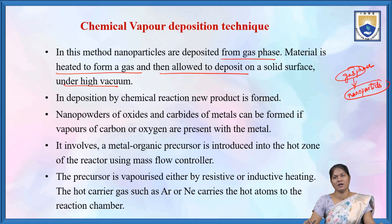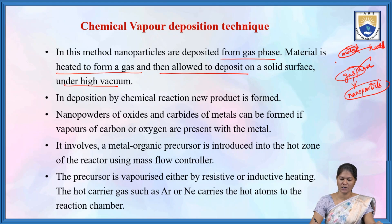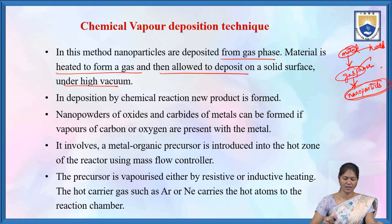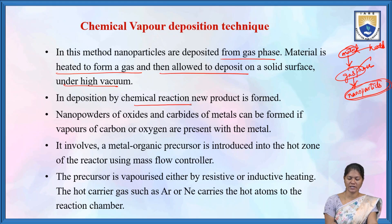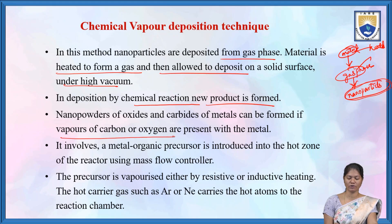In this method, nanoparticles are deposited from the gas phase. The material is heated so that it converts into gas phase and then is allowed to deposit on the solid surface under high vacuum. In deposition by chemical reaction, new products are formed. Nanopowders of oxides and carbides of metals can be formed if vapors of carbon or oxygen are present with the material.